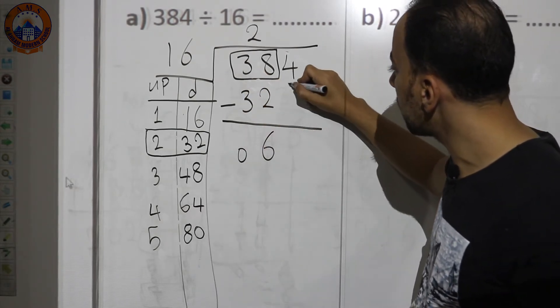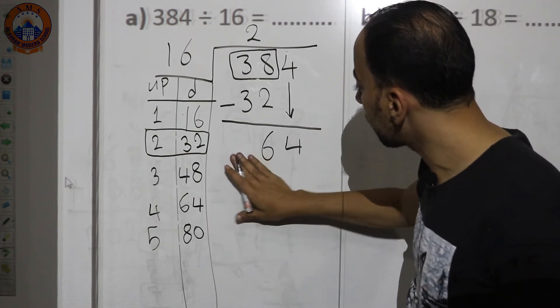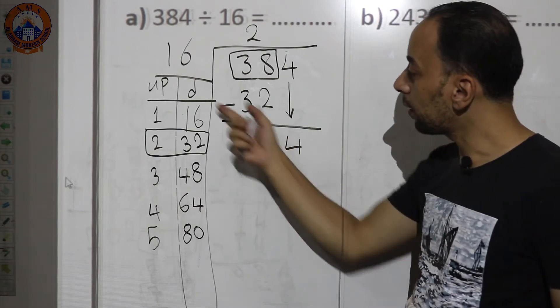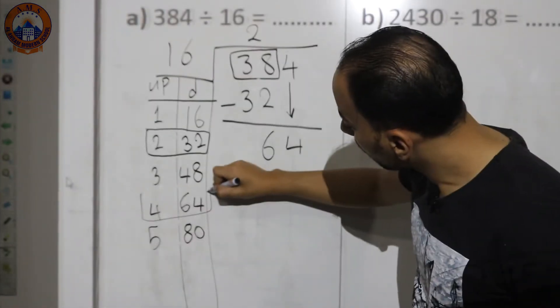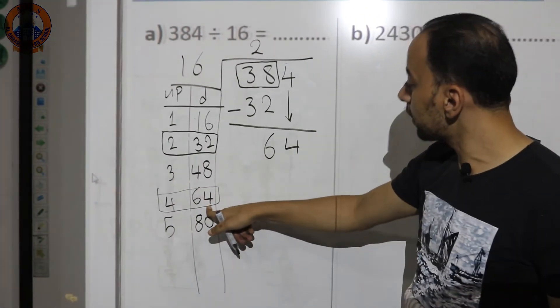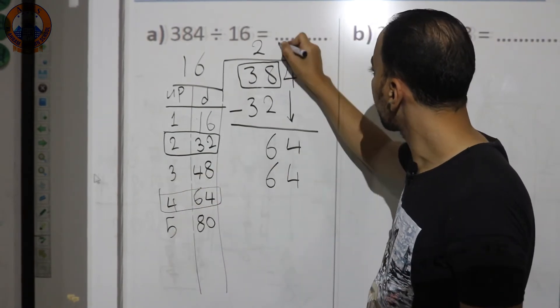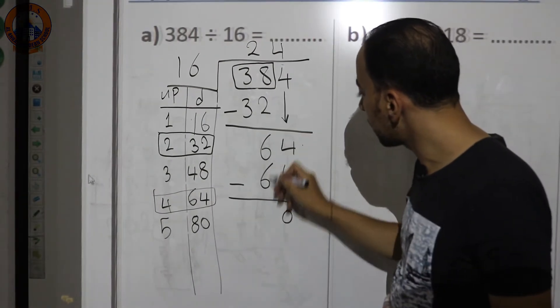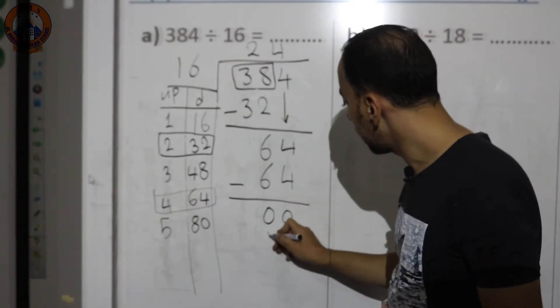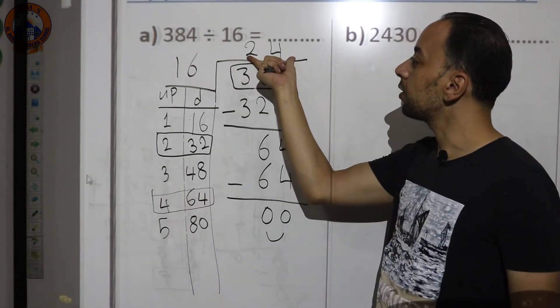Bring down the next digit 4, giving 64. Search the table — here is 64. Put 64 down and 4 up. Subtract: 64−64=0. There are no more digits to bring down, so the answer is 24.